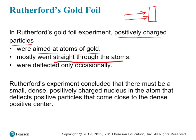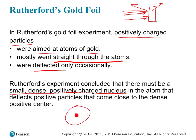But some of the particles bounced off and were deflected. Because some of the particles bounced back or bounced off the gold foil, Rutherford concluded that there must be a really small, dense, positively charged nucleus in the atom. His model had a really small, dense nucleus right in the center.